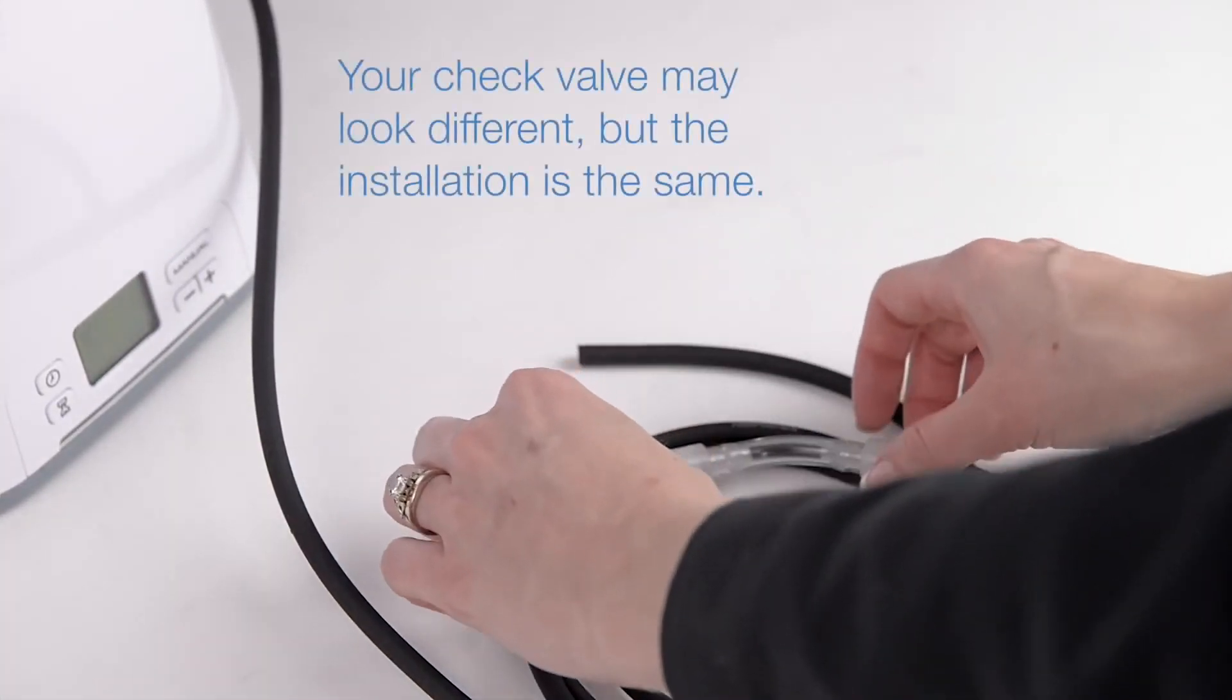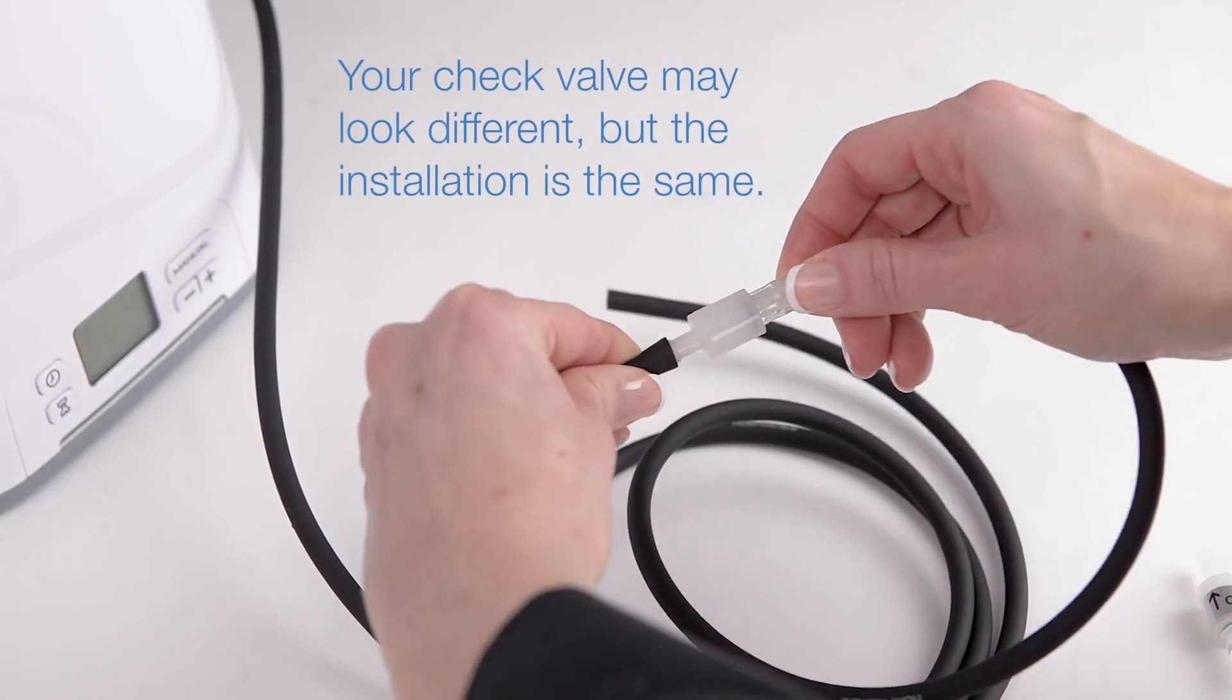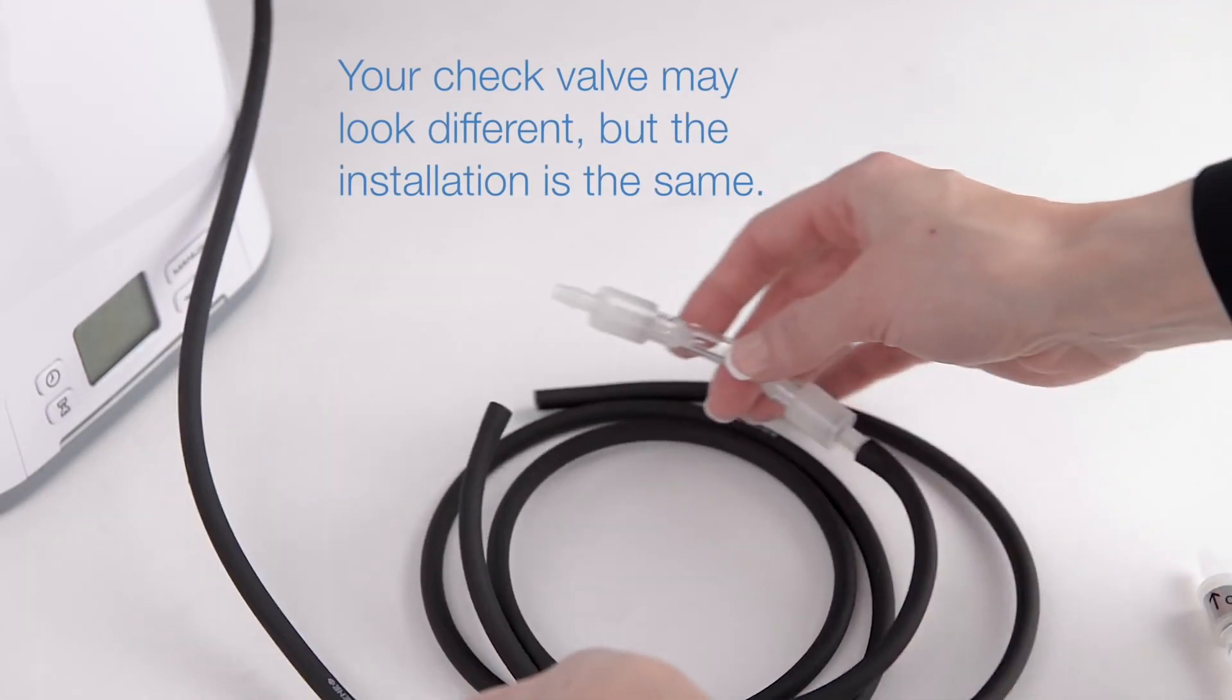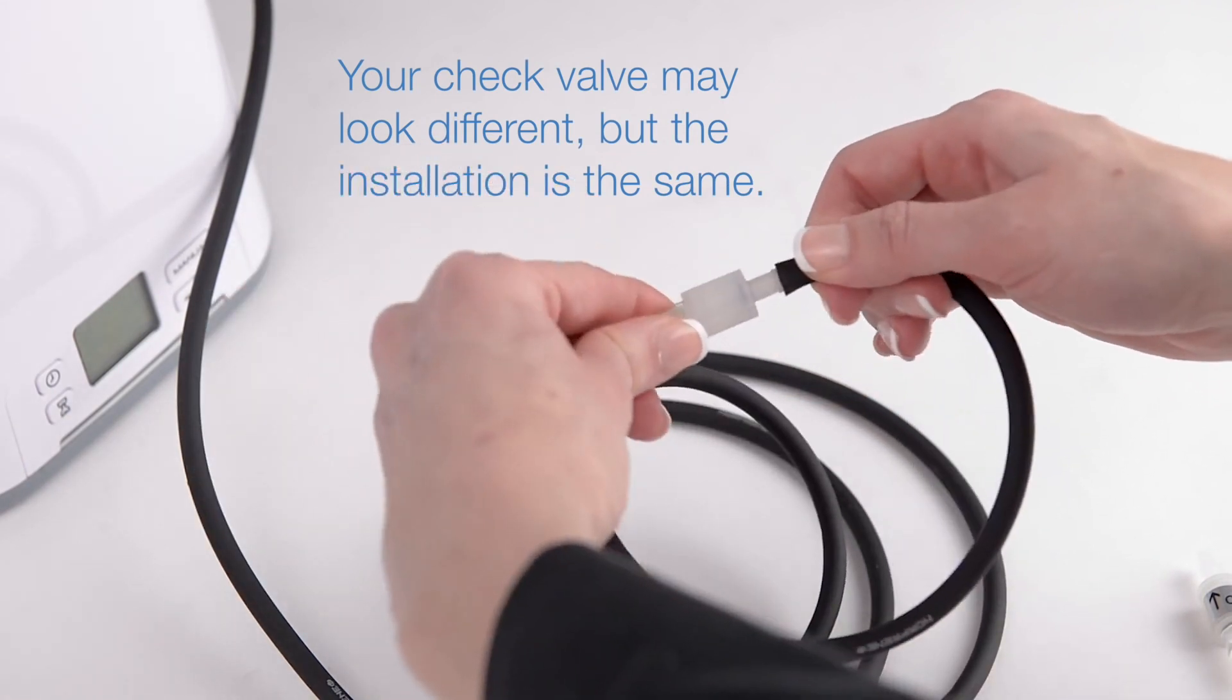Grasp the barrel of your current check valve firmly and pull the tubing away. It may be necessary to use a twisting motion. Repeat to disconnect the tubing from the other side.